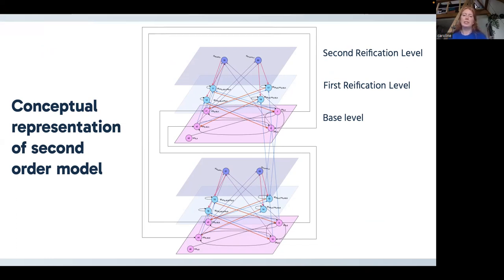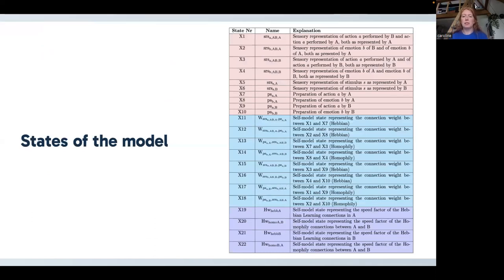So here again, we have our agent A and B and their interactions. Here we have a little overview of all the states that are included in the model. So we have per agent five states that represent the sensory representation and the preparation states. And we have per agent two states that influence the Hebbian learning and two that influence how the homophily connections change over time. And then per agent, we have in our third level a state that represents the speed of how the Hebbian learning changes and how the homophily connections change.